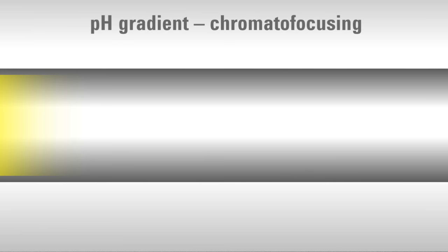In contrast to a salt or ionic strength gradient, a pH gradient uses a mixture of buffers consisting of a binding buffer with a low pH, such as pH 3, and an elution buffer with a high pH, such as pH 9. This technique is called chromatofocusing.